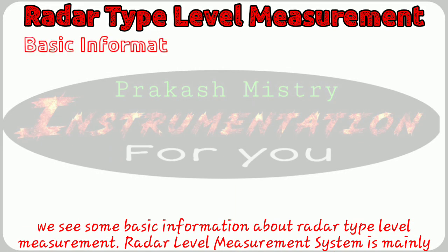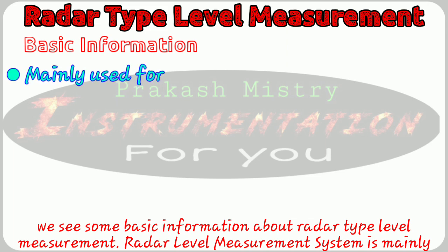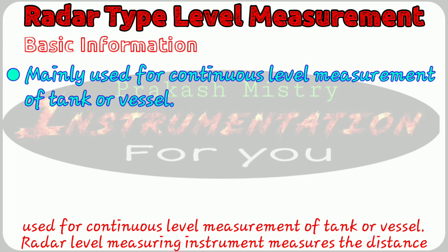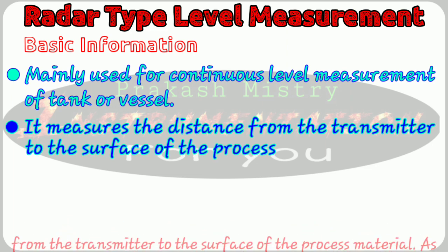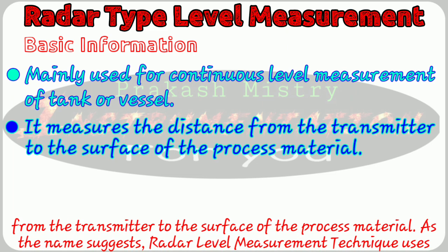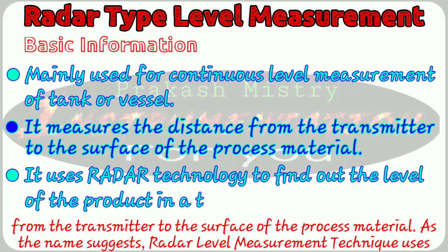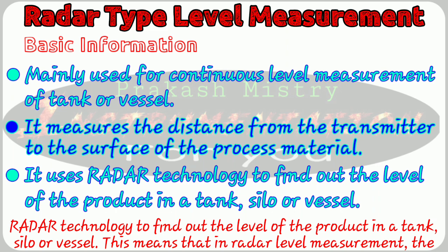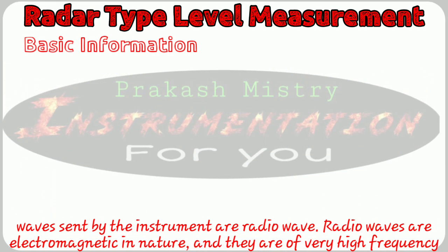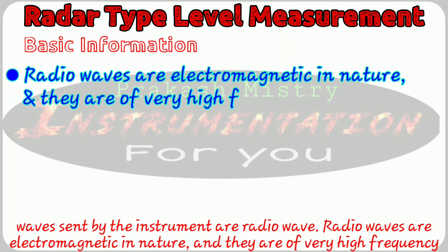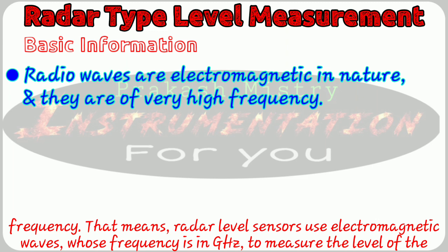Let's first see some basic information about radar type level measurement. Radar level measurement system is mainly used for continuous level measurement of a tank or vessel. Radar level measuring instruments measure the distance from the transmitter to the surface of the process material. As the name suggests, radar level measurement techniques use radar technology to find out the level of the product in the tank, silo, or vessels. The waves sent by the instrument are radio waves, which are electromagnetic in nature and very high frequency.